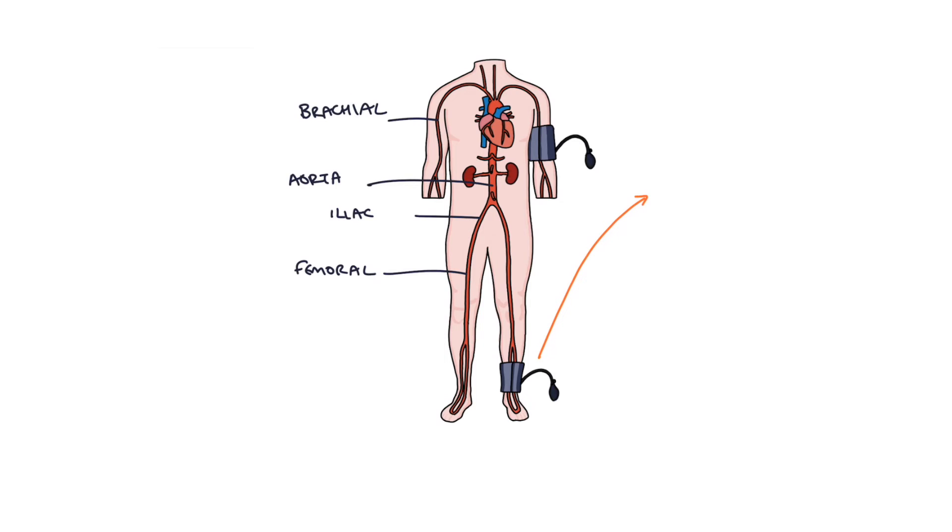So if you imagine the ankle reading is 120 and the brachial reading is 120 systolic, then you end up with a reading of one because equal amounts of blood are getting to both the ankle and the brachial arteries. This means that there's no peripheral vascular disease and we have a healthy person.